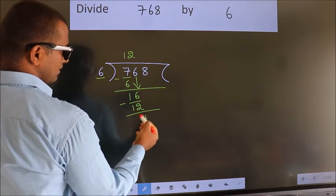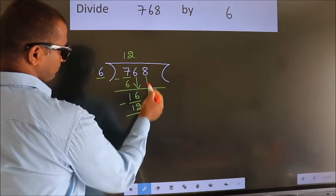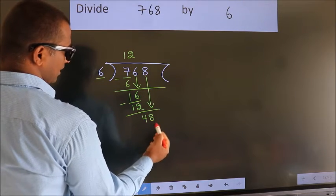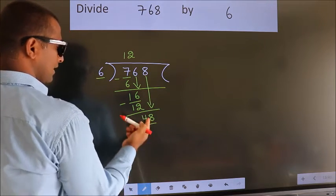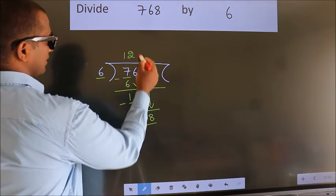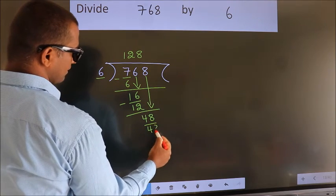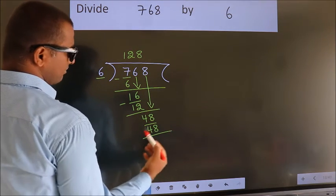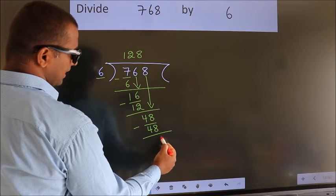After this, bring down the beside number. So 8 down, making 48. When do we get 48 in the 6 table? 6 eights is 48. Now we subtract. We get 0.